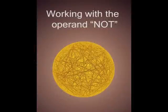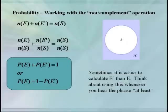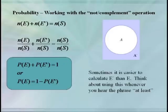Our next operation is NOT, or the complement. We know that the union of E and E-prime will be our entire sample space, and also that E and E-prime are mutually exclusive. So the number of things in E plus the number in E-prime equals the number in our sample space. Dividing by the sample space size, the probability of E plus the probability of E-prime equals 1. Usually we write this as: probability of E equals 1 minus the probability of E-prime. The idea is that sometimes it's easier to calculate the probability of the complement.